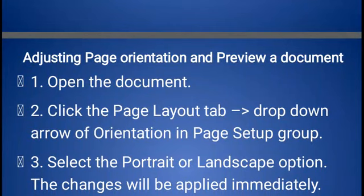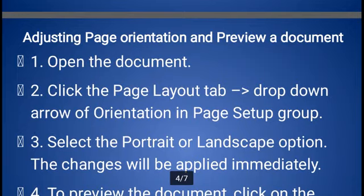You can also change the page orientation. Page orientation means — suppose you have a letter or application, you generally print it in vertical form, which is portrait. Suppose you have an attendance sheet or a certificate — that data will print in landscape style, meaning horizontally. To adjust page orientation: open the document, click the Page Layout tab, click the drop-down arrow of Orientation in the Page Setup group, and select Portrait or Landscape. Portrait displays the page vertically; Landscape displays the page horizontally. The changes will be applied immediately.